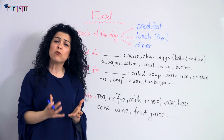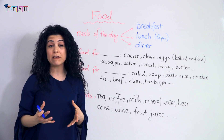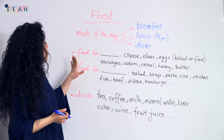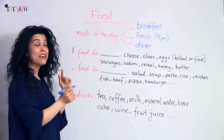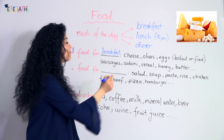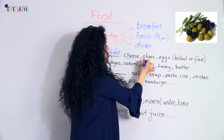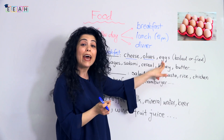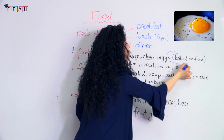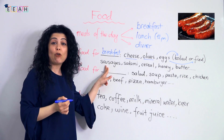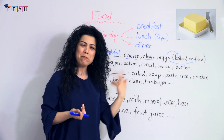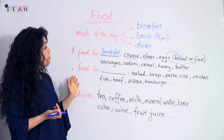What about the things we eat for these meals? What do we eat for breakfast, lunch, and dinner? Let's learn some vocabulary. For breakfast, we usually have cheese, olives — you can have black olives or green olives — we have eggs. You can have boiled eggs or fried eggs. You can have sausages, salami, cereal with milk, honey, and butter, among many other things.